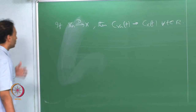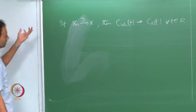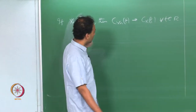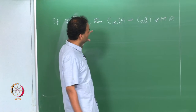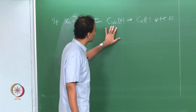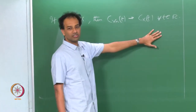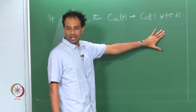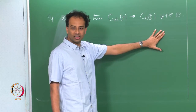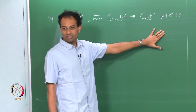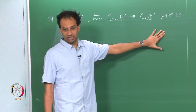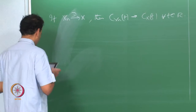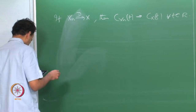Now we were talking about the opposite — the converse. If a sequence of characteristic functions converges to some limit, is it true that you have convergence in distribution? This is the result we were talking about.